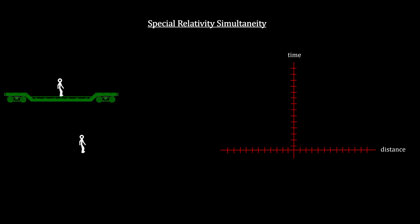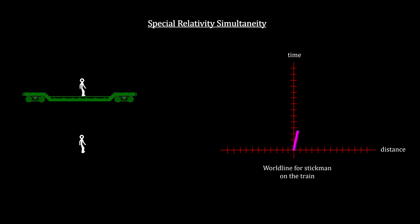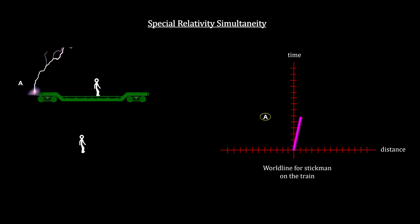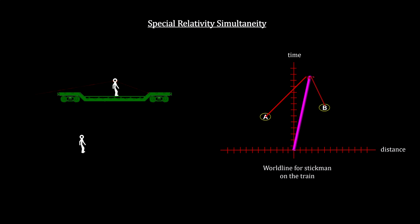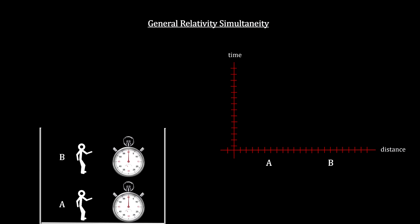Now let's repeat the lightning strike so that from the point of view of the person on the moving train, they strike at the same time. In order for the light to reach the person on the train at the same time, the strike behind him will need to hit first from the person on the ground's point of view, because it will have to travel further to get to the moving person than the light from the strike that hits in front of him. So we see that the simultaneity plane with a moving person is necessarily tilted up on the right. Now we can map the movements of A and B in the accelerating elevator to the space-time graph. The center is the source of the acceleration or gravity, with A to the right and B a bit further to the right, reflecting their distances from the source of gravity.